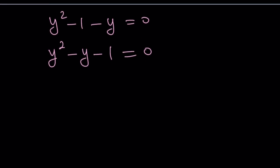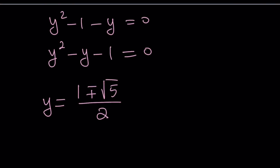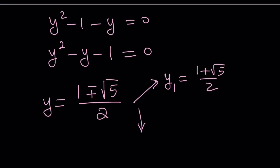Let's go ahead and solve this using the quadratic formula: negative b plus or minus the square root of b squared minus 4ac. Here b squared is 1 and minus 4 times negative 1 gives us 5. So from here you can see the golden ratio connection. We get two values: y sub 1 is 1 plus root 5 over 2, and y sub 2 is 1 minus root 5 over 2. There are two solutions and one of them is negative.